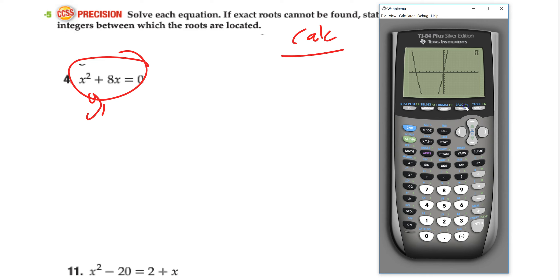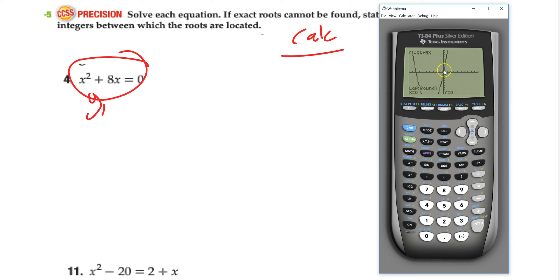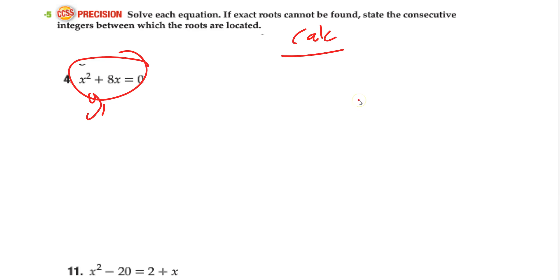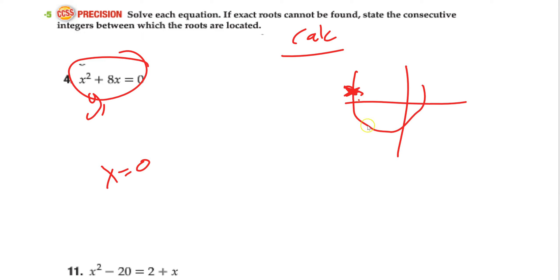If you want to see the solutions, you can kind of count them on the graph, but let me show the calculator way. We're going to go second → calculator, and we want the zero — because the x-intercept is at 0. It works just like finding the min/max. I want to find the zero right here, so I go a little left of it for the left bound, and a little right of it for the right bound. It searches between my two bounds and gives me the answer — in this case, x = 0.